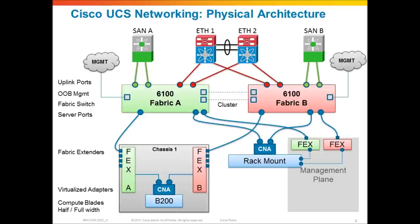To connect rack mount servers to the Fabric Interconnect, you take the CNA ports on the rack mount server — here I've got a rack mount dual-ported, which could be the C200 series, C210, or C250, all Cisco rack mount servers — and link that physical CNA port directly to the Fabric Interconnect on a port defined as a server port. I also need to create a management plane, because currently this physical port on the CNA is for data traffic only. So I take the 1GB LAN on motherboard links on the rack mount server and connect those to a pair of 1GB Fabric Extenders — the 2248 FXs — and then link the uplink of the 2248 Fabric Extender to the Fabric Interconnect, also defined as a server port.